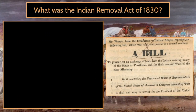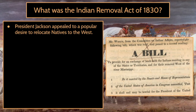In 1830, one of the most infamous pieces of legislation in the history of the country was passed: the Indian Removal Act of 1830. Our next left-side question is: what was the Indian Removal Act of 1830? President Jackson appealed to a popular desire to relocate Natives to the West. A significant part of the voting population, especially Jackson's supporters, wanted the Native Americans gone — moved west of the Mississippi River, where Americans at that point wouldn't have to deal with them anymore. It was literally that blatant.